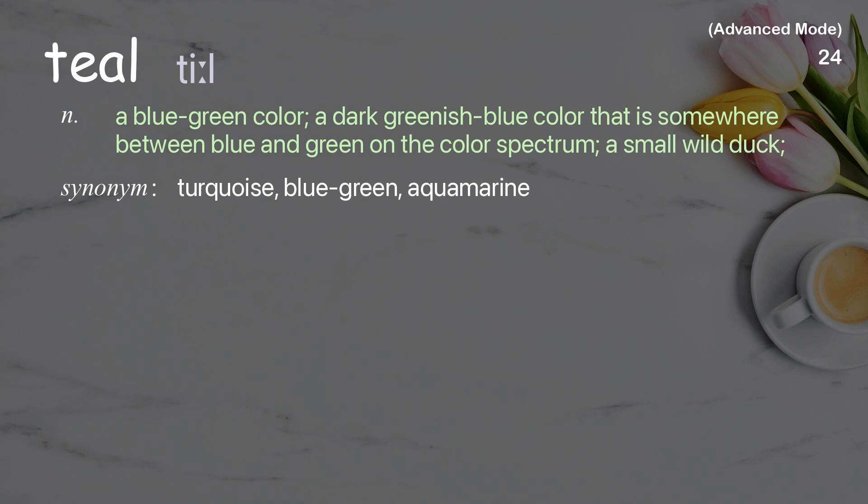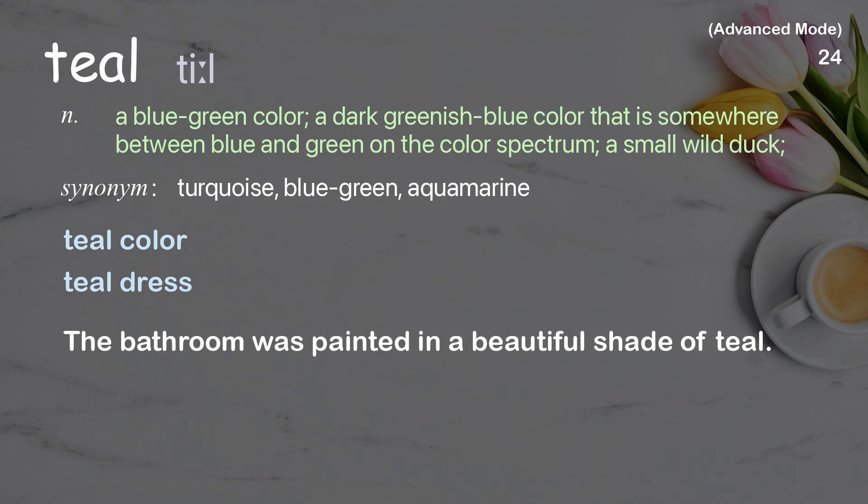Teal: a blue-green color, a dark greenish-blue color that is somewhere between blue and green on the color spectrum; also a small wild duck. Examples: teal color, teal dress. The bathroom was painted in a beautiful shade of teal.